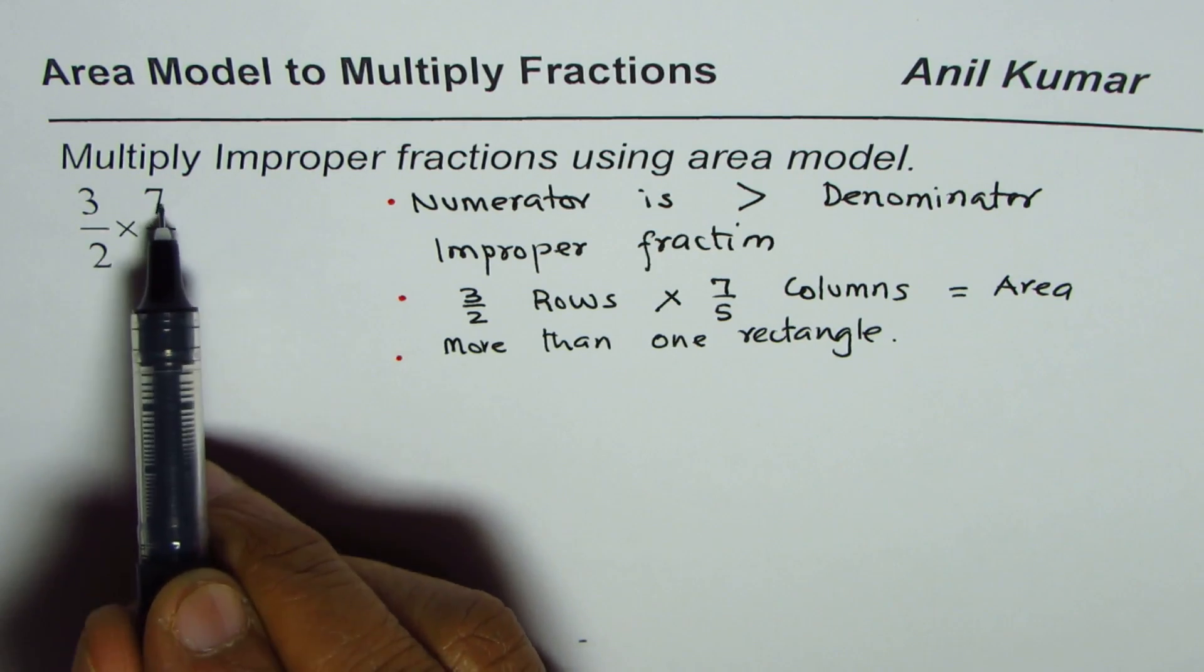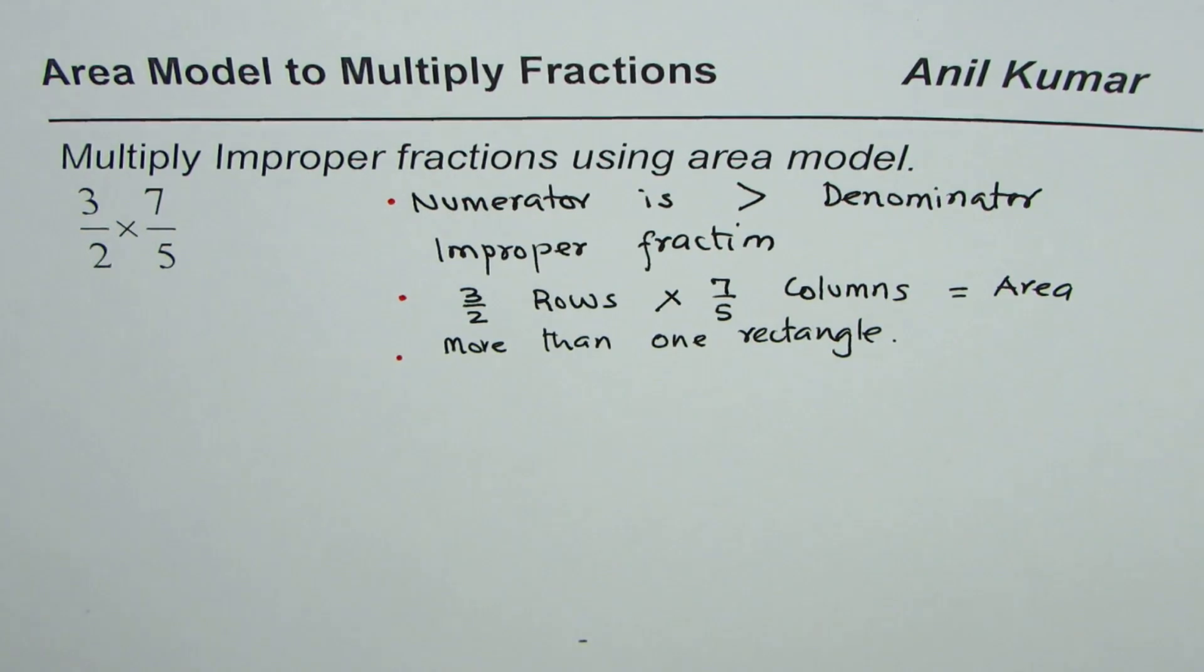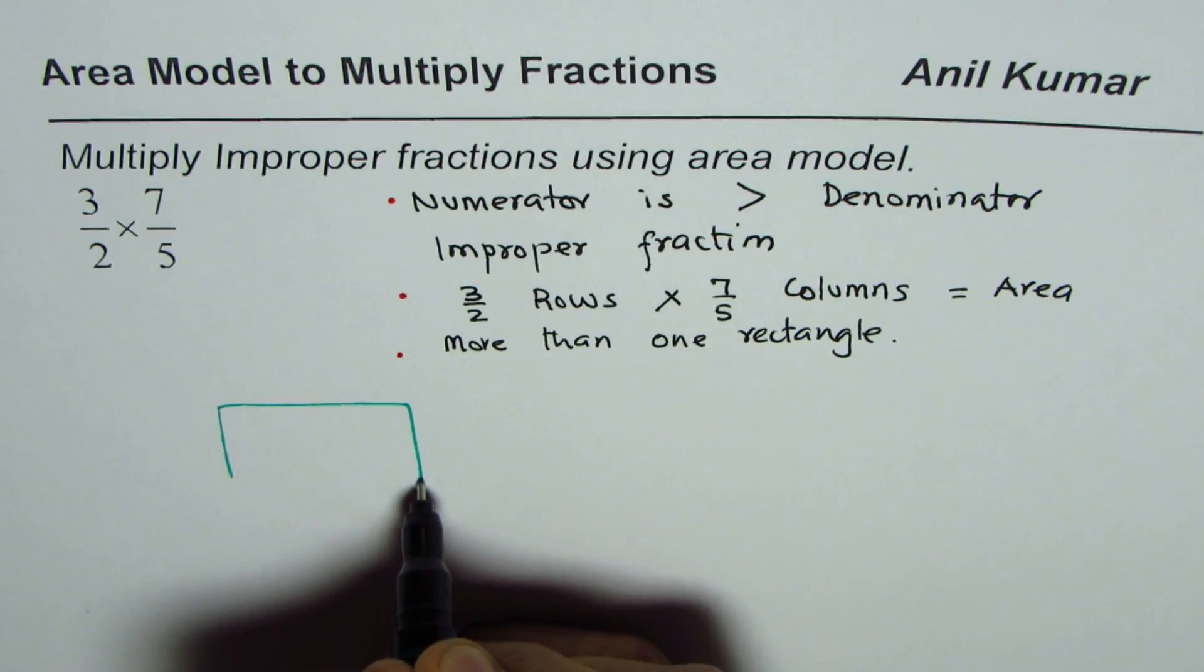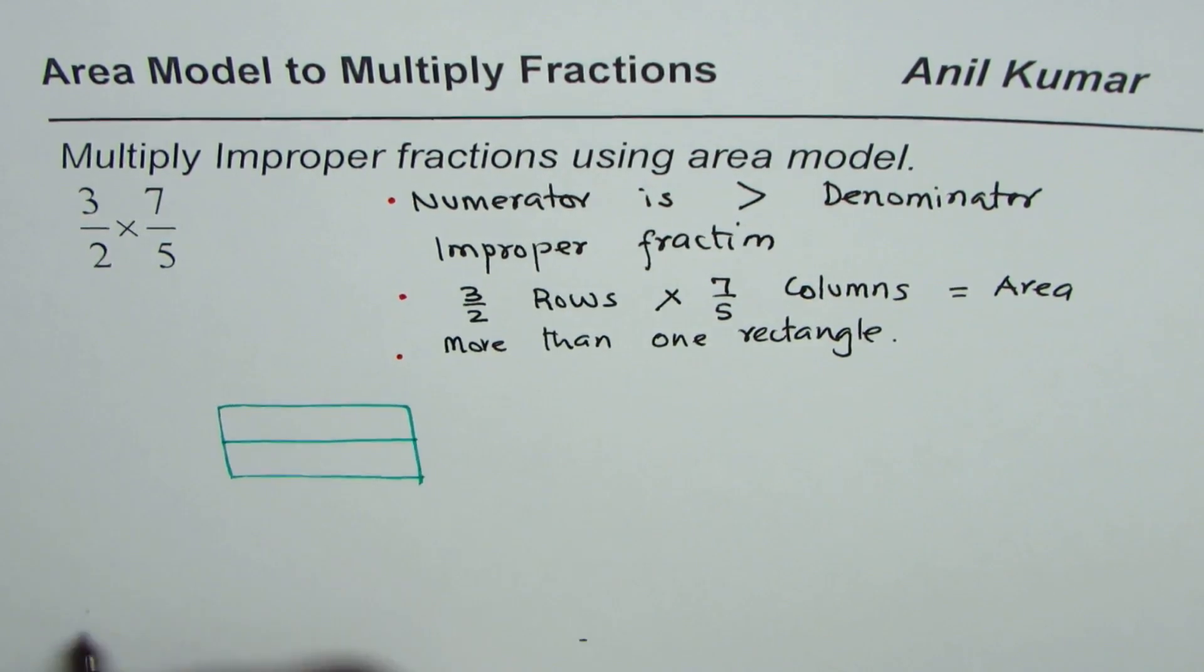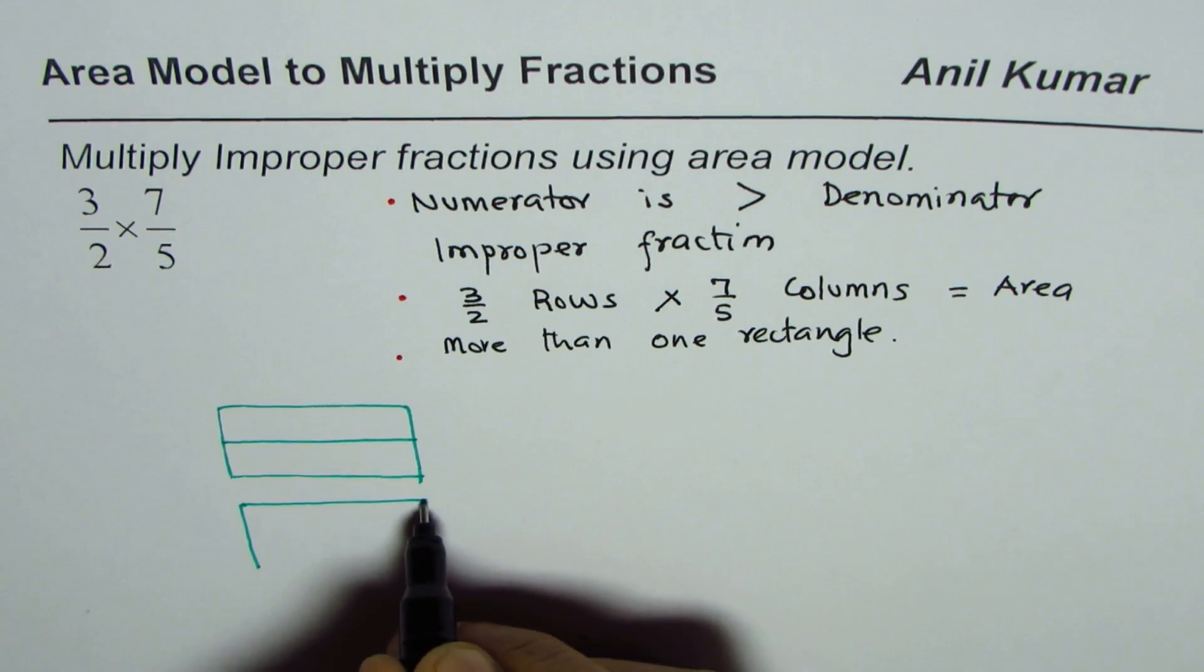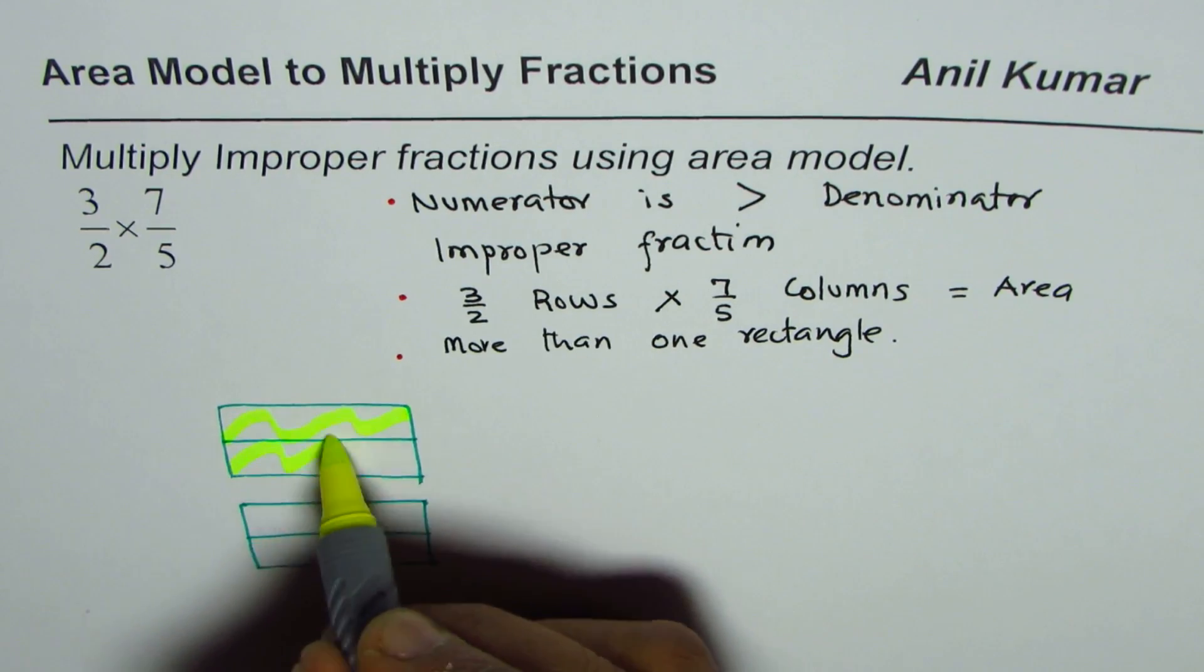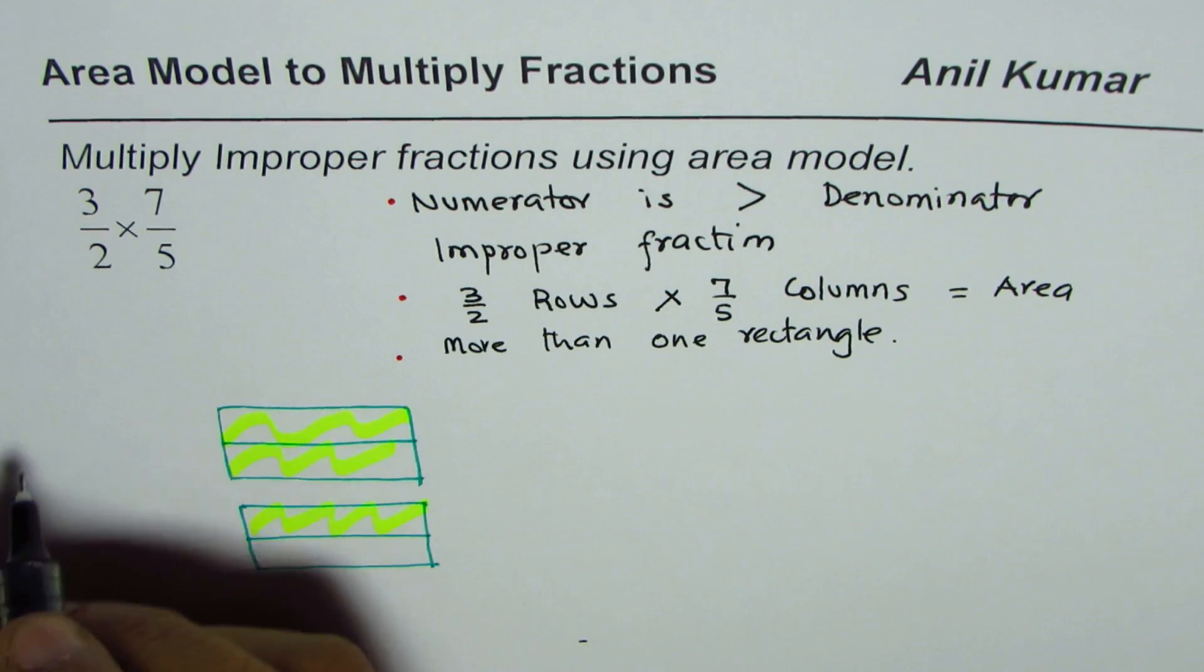Since both rows and columns are having improper fractions, we actually need four: two for the rows and two for the columns. We work with one particular rectangle, divide it into two parts. But we need to select three, so we make a copy of this, another rectangle exactly the same. Now we have two rectangles and we'll select three: one, two, and three. We have selected three out of two rows.